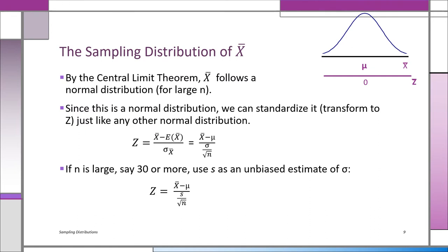Let me talk a little about the sampling distribution of x-bar, not to be confused with the sampling distribution of x. Remember, x is the individual value; x-bar is the sample mean. We can actually turn x-bar into a Z value. Z equals x-bar minus mu over sigma divided by the square root of n. That converts your sample mean into a Z score. If n is large — some say 30, some say 50 — you can use S as the unbiased estimate of sigma.